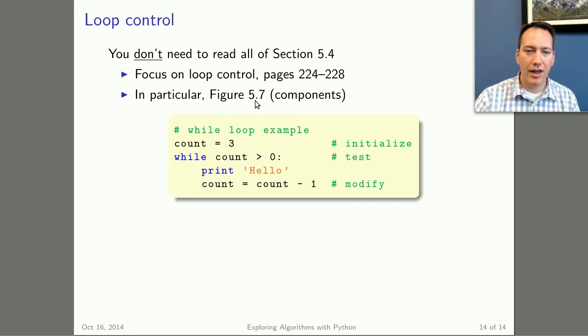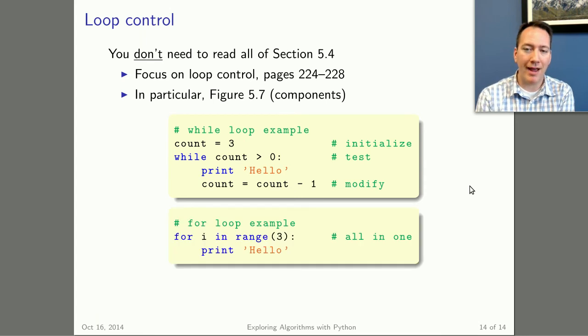It always has three components. So let me just show you this while loop from the book, this greetings example. Count equals three, while count is greater than zero, print hello, and then count equals count minus one. Here's the three parts of the loop that's discussed in Figure 5.7. We've got the initialization step. We've got the test, where we're testing the loop variable to see if we've reached the termination point. And finally, the modify step, where you're modifying the variable that you're looping on. You can actually find these three elements in any type of loop.